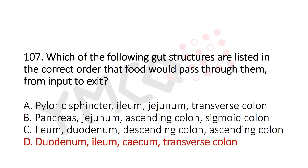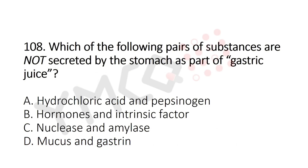Now Question 108: Which of the following pair of substances are not secreted by the stomach as part of gastric juice? Option A: hydrochloric acid and pepsinogen, Option B: hormone and intrinsic factor, Option C: nuclease and amylase, Option D: mucus and gastrin. The answer is Option C: nuclease and amylase.